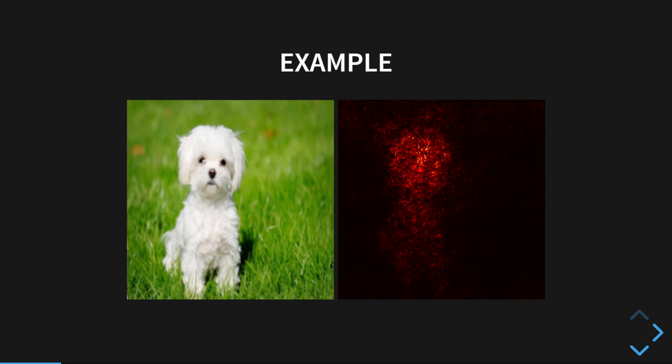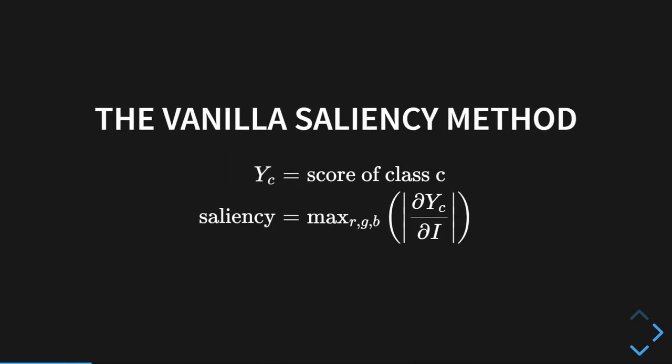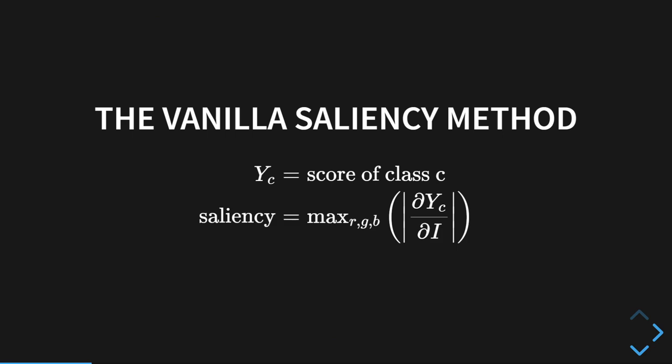This heat map is obtained by a very simple approach which was first introduced in a 2013 paper by Karen Simonian and others from Oxford. Let's say you want to know the saliency with respect to some class C. You pass the input image through your neural network and obtain the score for class C. Score means the value which we get in the output layer just before the softmax. We call that score Yc.